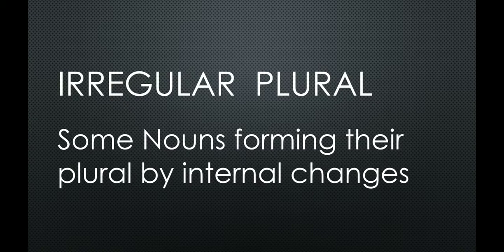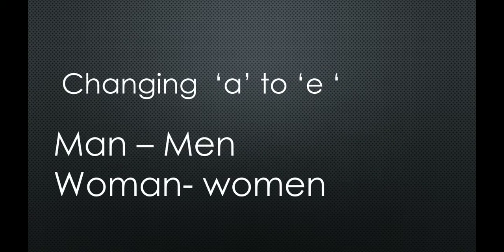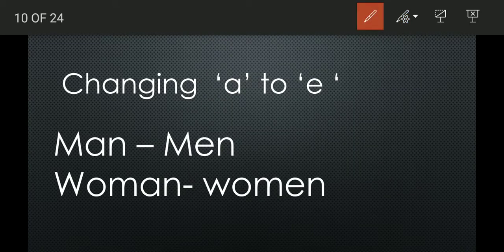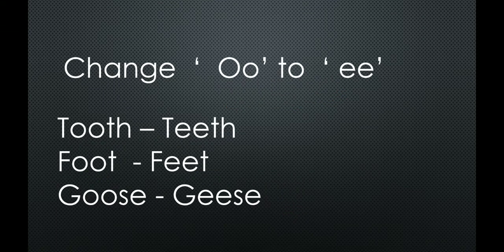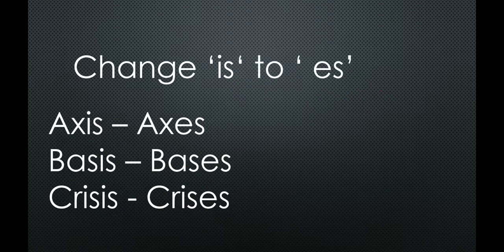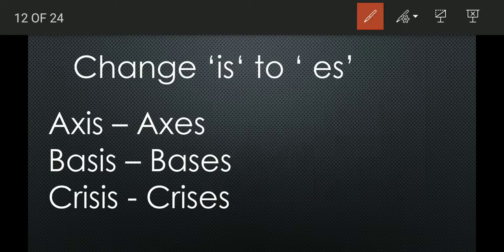Irregular plurals: some nouns form their plural by internal changes. The first is changing A to E: man → men. The next is changing OO to EE: tooth → teeth, foot → feet, goose → geese.